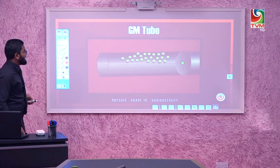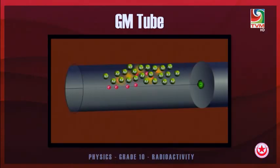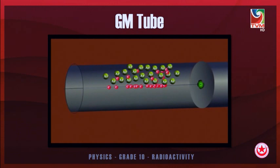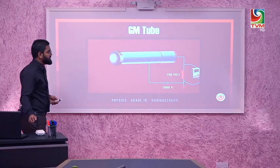As radiation passes inside, the argon gets ionized, supplying electrons so the circuit completes and a reading is obtained. Greater the ionizing power, greater will be the reading; lower the ionizing power, lower will be the value obtained at the rate meter.